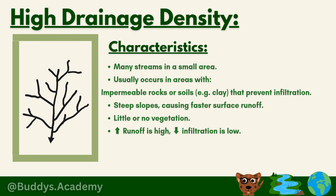Now for high drainage density — the first characteristic is that there are many streams in a small area. It usually occurs in areas with impermeable rocks or soils, an example being clay, which prevents infiltration. If it's impermeable, water cannot pass through. The next characteristic is that it occurs on steep slopes, causing faster surface runoff. Steep, slanted land means gravity causes water to flow down quickly, leading to fast surface runoff and less time for water to soak in.